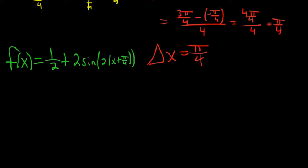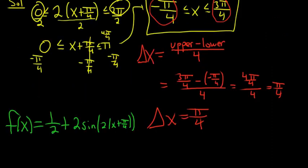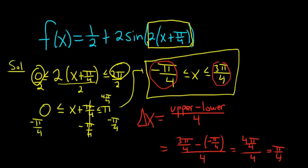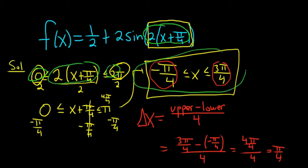Let's recap what we've done. We took the argument here and set it between 0 and 2π. We solved for x and got our interval. Then step two: do upper minus lower divided by 4 to get delta x.